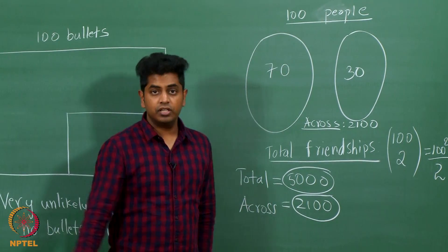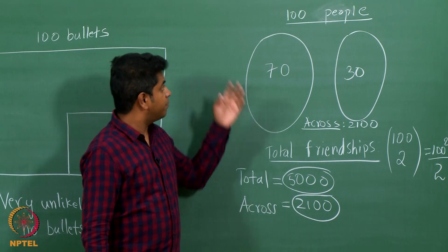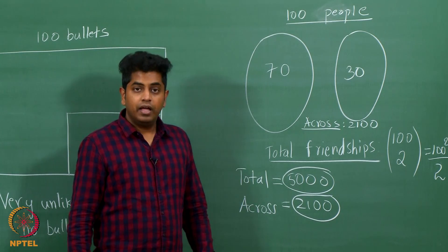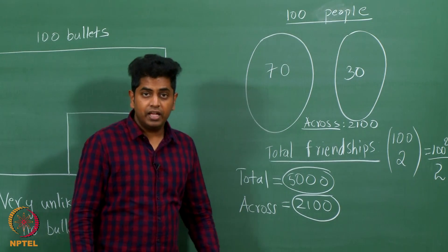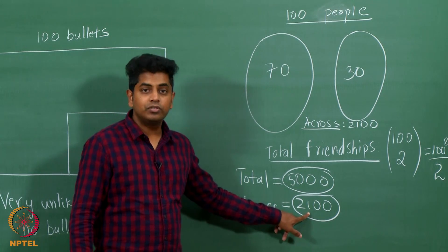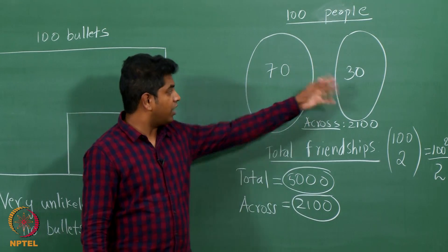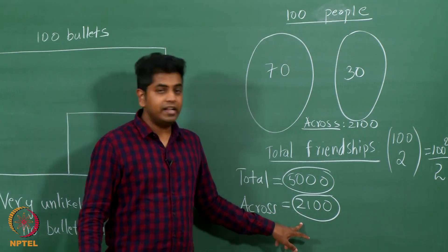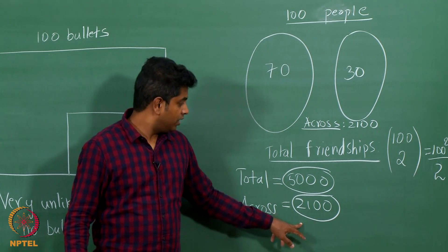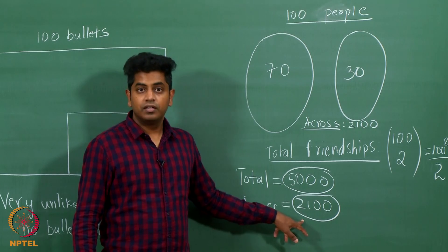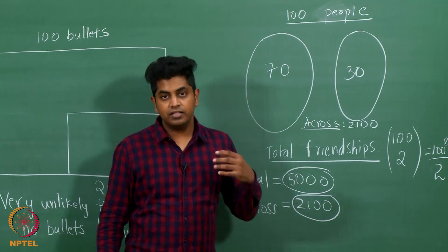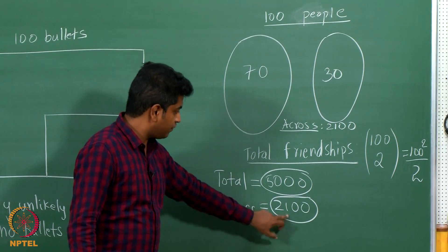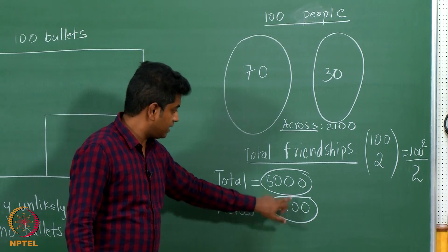Here is a situation where there was a possibility for people to make 5000 something friendships and every single friendship that they chose did not fall into this, did not fall into the across friendship. There were so many possible ways in which they could have had an across friendship. They did not, all of them fell within only. This is very unlikely. The intuition is this: do you see this is roughly half of this?